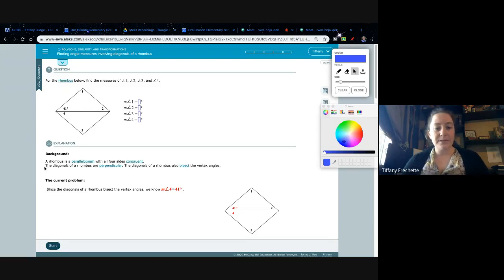So a rhombus is a parallelogram with all four sides congruent. So we know it's a parallelogram. All the qualities of parallelogram go with it. Two pairs of sides are parallel. Opposite sides are congruent. Opposite angles are congruent. We also know that the diagonals bisect each other. And we know now that, because it's a special parallelogram called a rhombus, that all four sides are congruent.